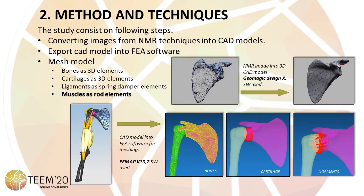The procedure to obtain the finite element model starts from images obtained by nuclear magnetic resonance, from which we can obtain a CAD model of the geometry to be analyzed. In our case, this task was carried out using Geomagic Design X. After the CAD model has been obtained, it must be exported to a finite element software — in our case FEMA — in which we can carry out the meshing.